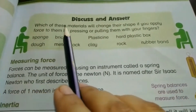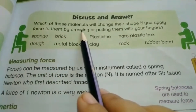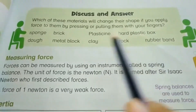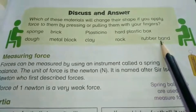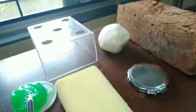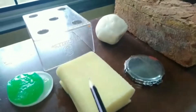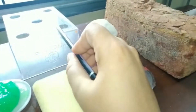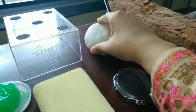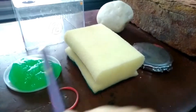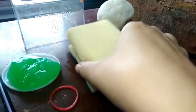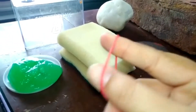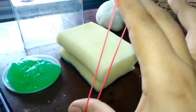Next, we will discuss the question on page number 71: which of these materials will change their shape if you apply force to them by pressing or pulling with your fingers? The materials are: sponge, brick, plasticine, hard plastic box, dough, metal block, clay, rock, and rubber band. Hard plastic box, rock, brick and metal block are very hard — we cannot change their shape by applying force. We can change the shape of the rubber band by stretching it, and it resumes its original shape after the force is released.